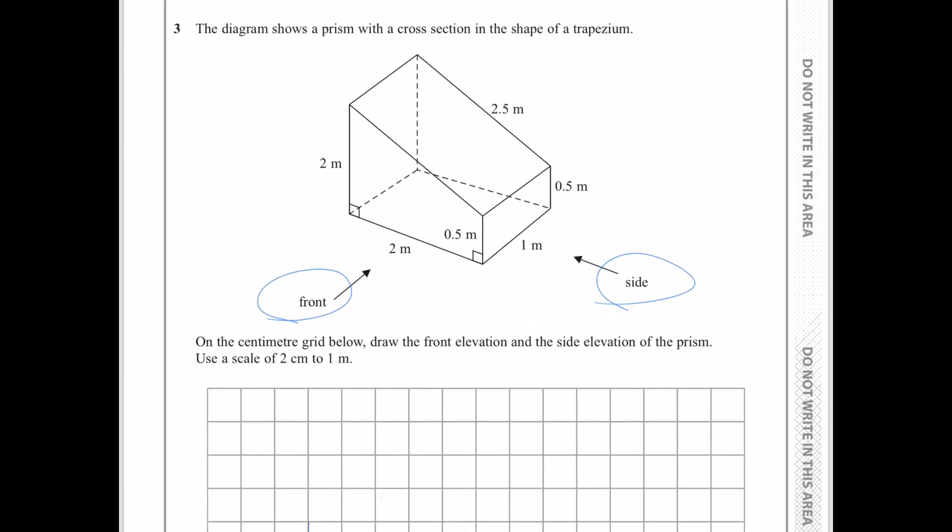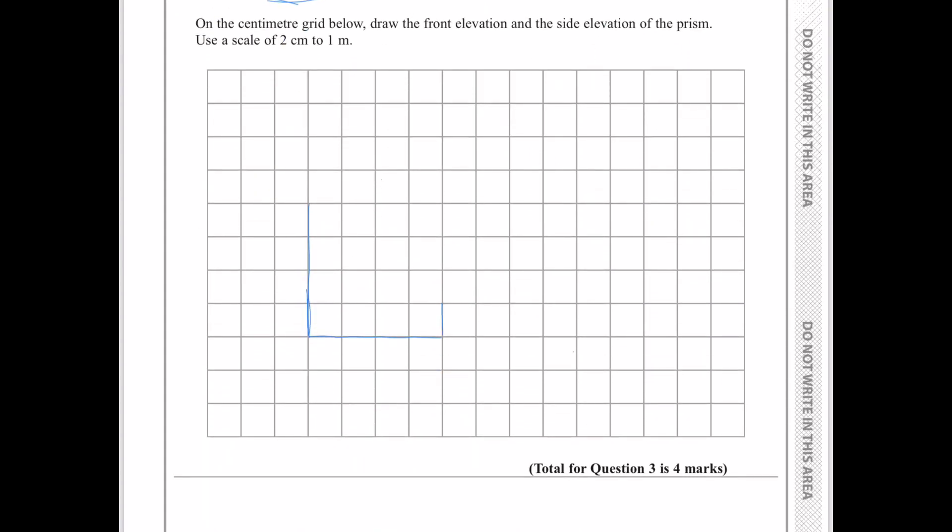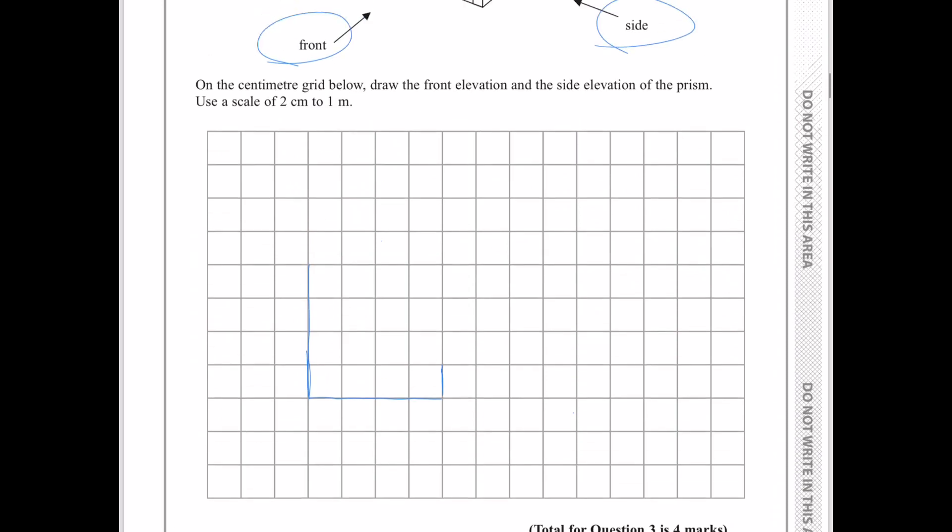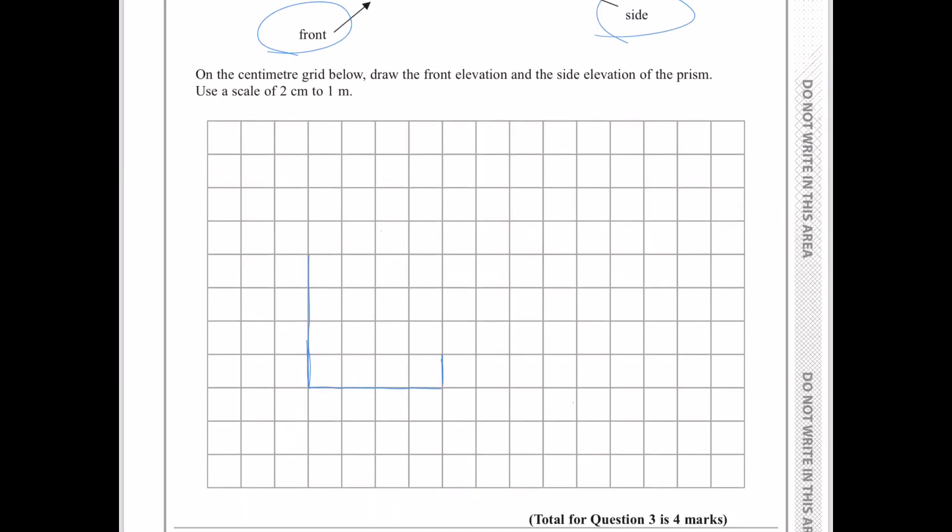The shorter one is 0.5 metre, so if I use the scale, it would be 1 centimetre on the grid. Now, I am going to connect these two points. So, this is the front elevation of the prism.